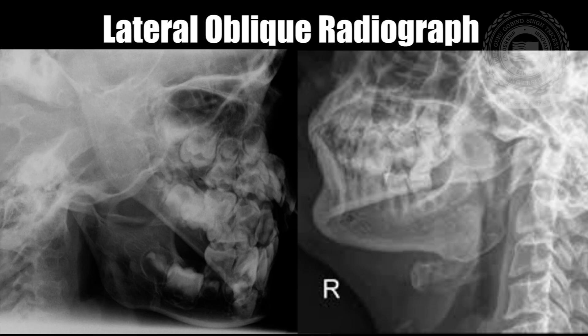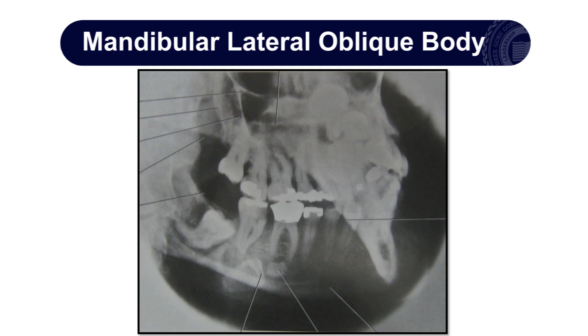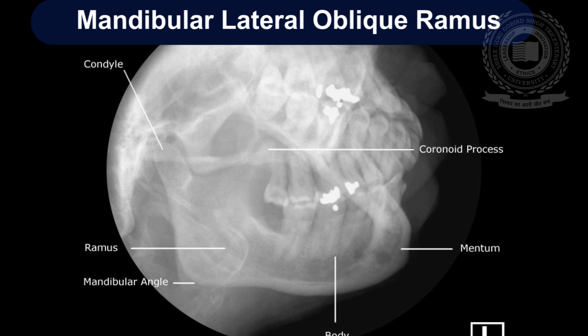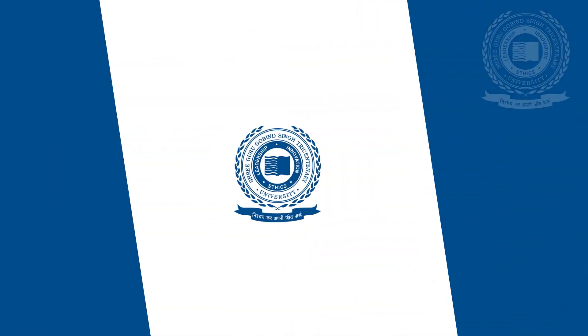Now we move on to the oblique lateral projection. This oblique radiography could be of three types: the mandibular body projection which focuses on the mandibular body; the mandibular ramus projection which predominantly shows the mandibular ramus and the condylar region; and the bimolar projection where oblique mandibular body projections of both sides are taken on a single image by using a lead sheet to cover one half of the image receptor. Notably, these projections can be taken with an intraoral x-ray machine, but since the image receptor is placed outside the oral cavity, they are categorized as extraoral radiographs.